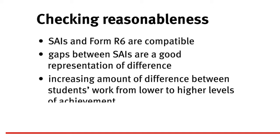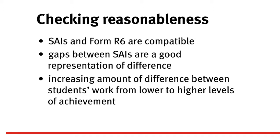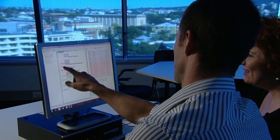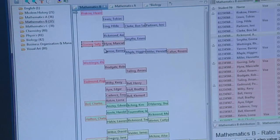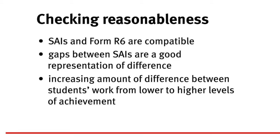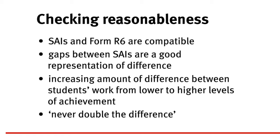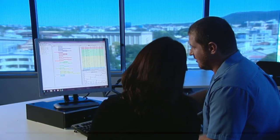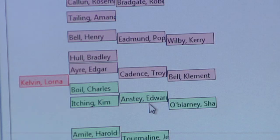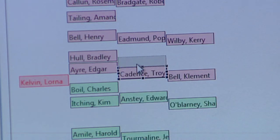Teachers should also check that there is an increasing amount of difference between students. Work that matches the lower levels of achievement is likely to be more similar to each other than work that matches the higher levels of achievement. But there should never be more than double the difference between any two places in the SAI distribution. This is because over many years of comparing students' folios of work, subject experts have never seen double the difference between sets of student folios. In fact, there is often much less difference between students than this, particularly if an SAI distribution only covers a couple of levels of achievement. Double the difference is a limit, not something to aim for.